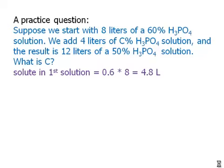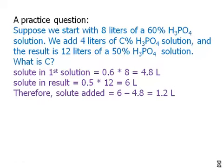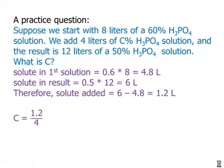So in the first solution, I had 4.8 liters of solute. In the resultant solution, the final solution, I had 6 liters of solute. And that means that the amount of solute that was added, that amount of solute was 1.2 liters. So let's think about this. There's 1.2 liters of solute in that 4-liter solution, so we just have to figure out 1.2 is what percent of 4. So divide this out, and we get that this is 30%, and so C equals 30%.